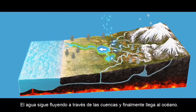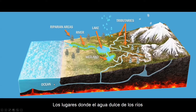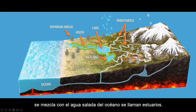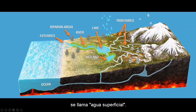The water keeps flowing through watersheds and ultimately reaches the ocean. The places where fresh water from the rivers mixes with the salt water from the ocean are called estuaries. The water that flows through all these bodies of water is called surface water.